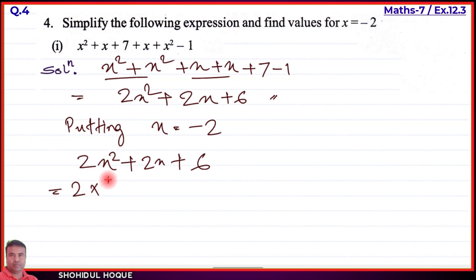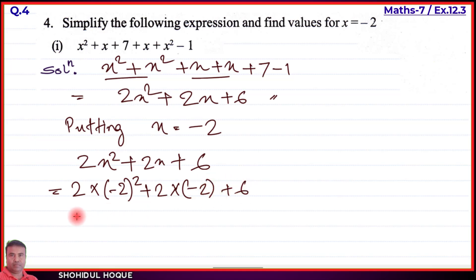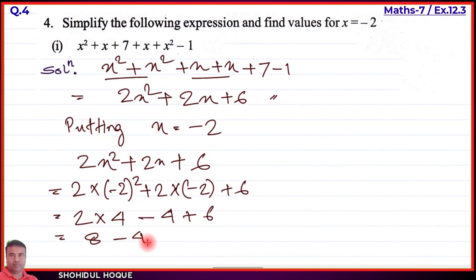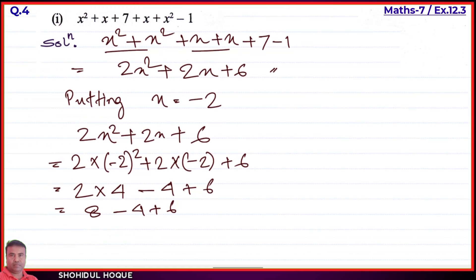So we write: 2 into (minus 2) square plus 2 into (minus 2) plus 6. Calculating: minus 2 squared equals plus 4, so 2 into 4 equals plus 8. Then 2 into minus 2 equals minus 4. Plus 6. So we have 8 minus 4 plus 6.